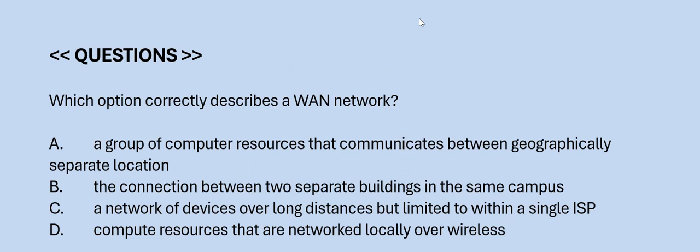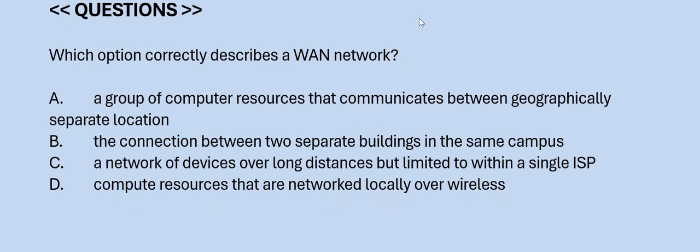Question: Which option correctly describes a WAN network? Option A: a group of computer resources that communicates between geographically separate locations. Option B: a connection between two separate buildings in the same campus. Option C: a network of devices over long distances but limited to within a single ISP. Option D: compute resources that are networked locally over wireless. The correct answer is Option A.